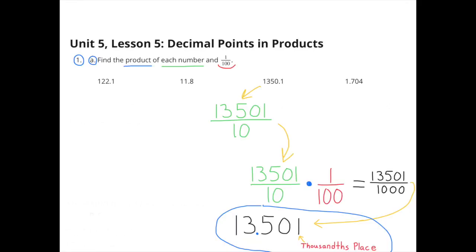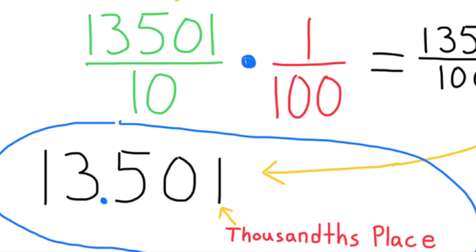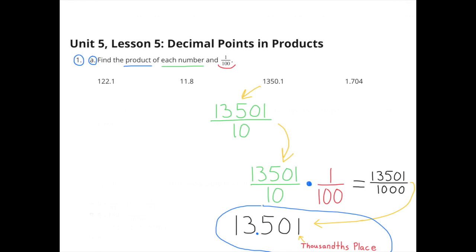One thousand three hundred fifty and one-tenth can be rewritten as thirteen thousand five hundred one over ten. So thirteen thousand five hundred one-tenths times one-hundredth equals thirteen thousand five hundred one-thousandths. This number ends in the thousandths place, so the one is in the thousandths place and the decimal goes between the ones place and the tenths place. The final product is thirteen and five hundred one-thousandths.